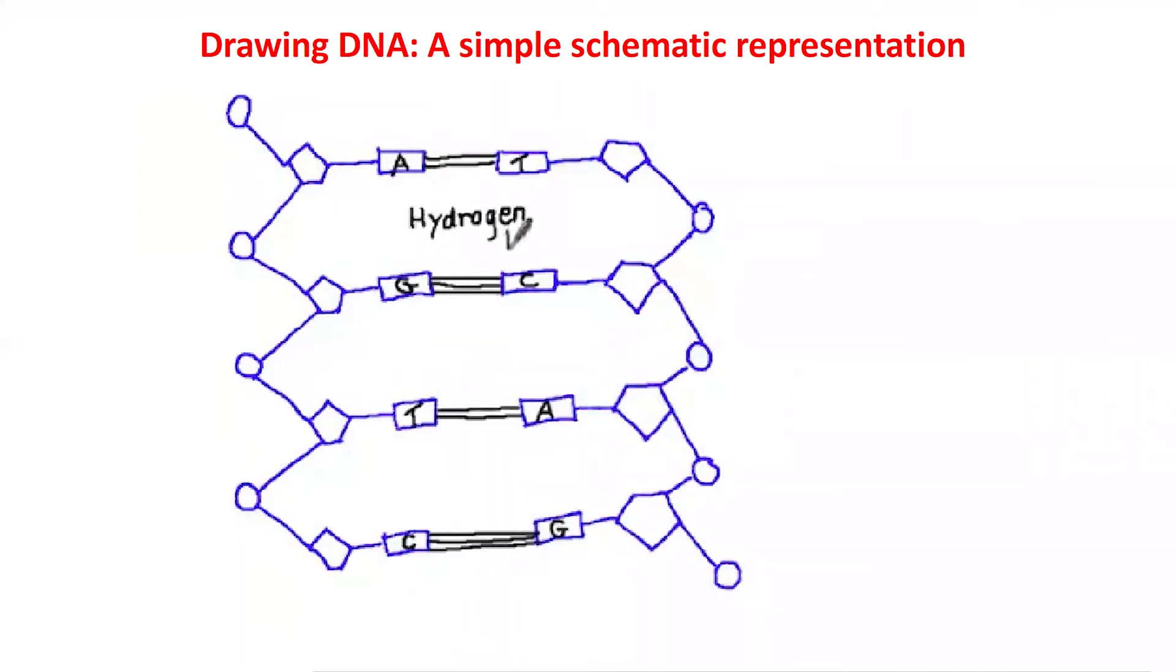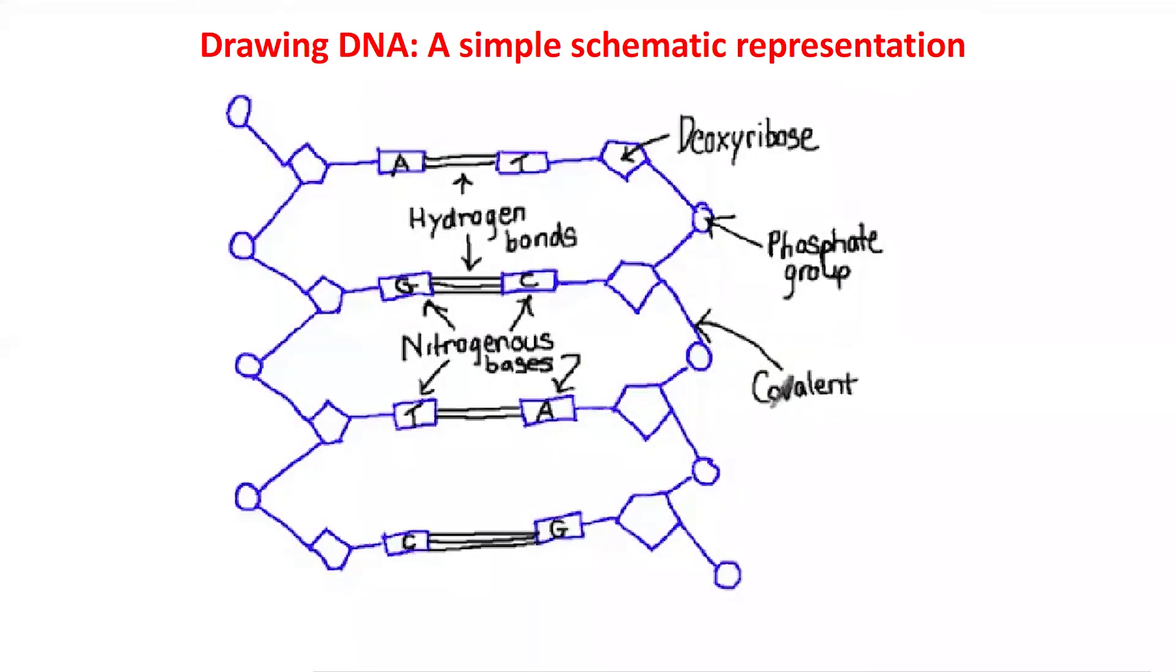Once you have drawn it, make sure that you label everything—the hydrogen bonds, the covalent bonds, the nitrogenous bases, deoxyribose, the phosphate group—and go ahead and draw a line around a nucleotide as well. This gives you an idea of the biochemistry as well as the structure of DNA.